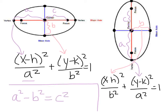One more thing to add: the latus rectum of an ellipse is the line that goes through the focus to the edges of the ellipse. You'll have one on each side, and they'll be the same. The length of your latus rectum is going to be 2B squared over A. Make sure you put that in your notes.